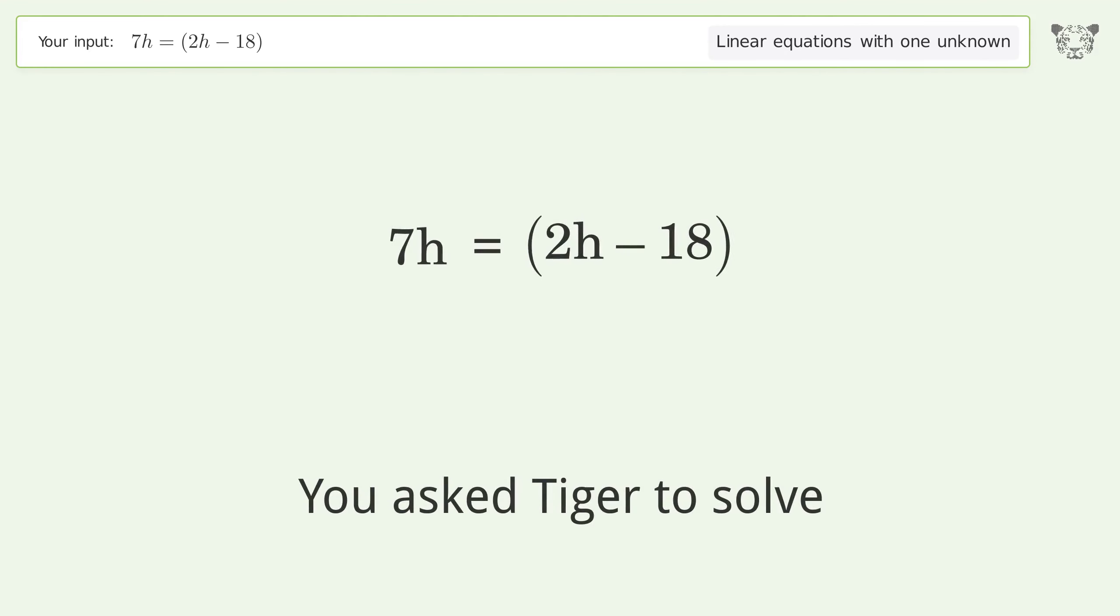You asked Tiger to solve. This deals with linear equations with one unknown. The final result is h equals negative 18 over 5.